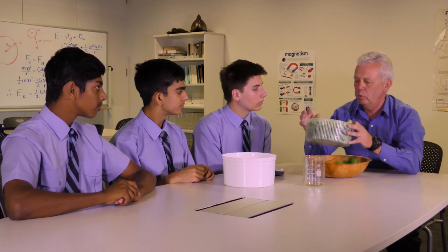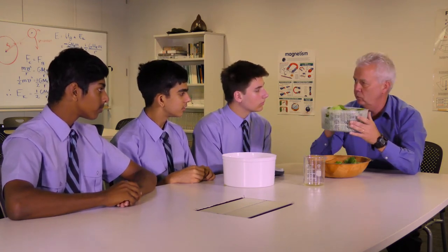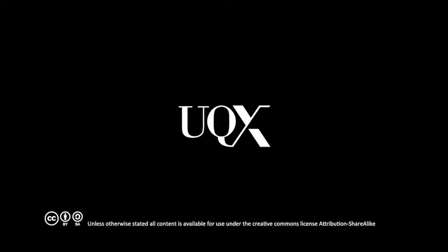How can we explain the water droplets being removed from the salad leaves as the basket moves in a circular motion? How can we explain the water?